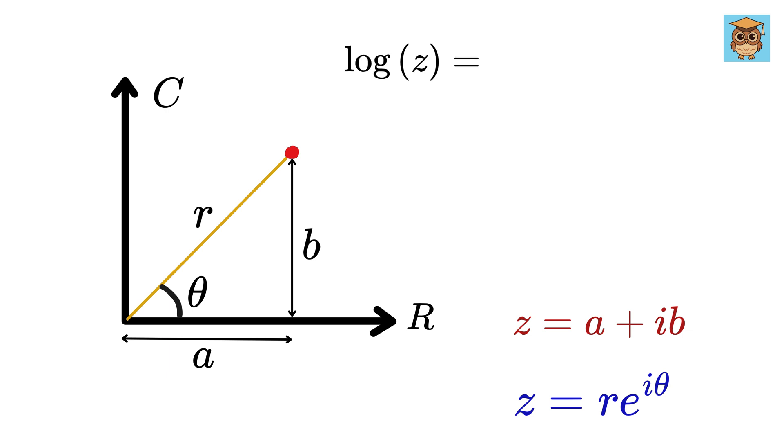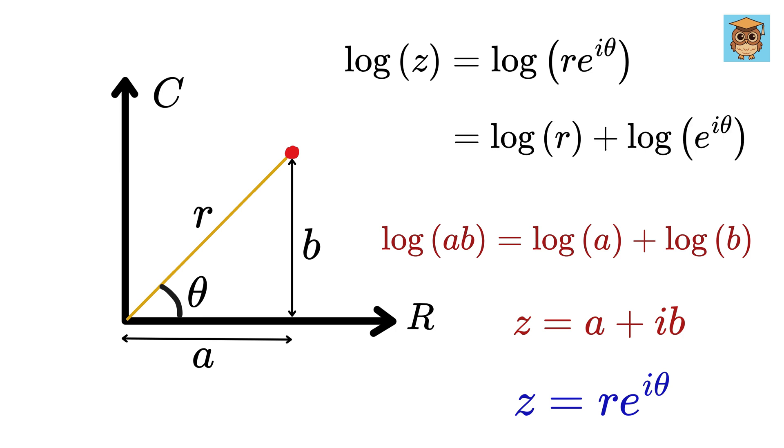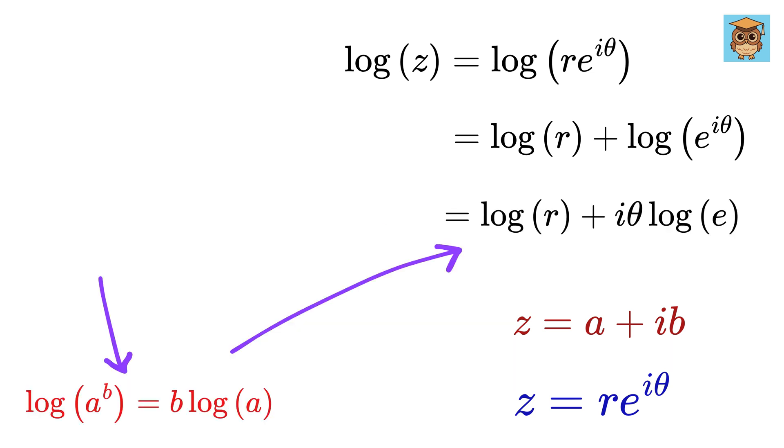If we take log of z, we get log of r e to the i theta, which using this property of log gives this: log of r plus log of e to the i theta. Now, using this property of log and using the fact that log of e equals 1, we get log r plus i theta.